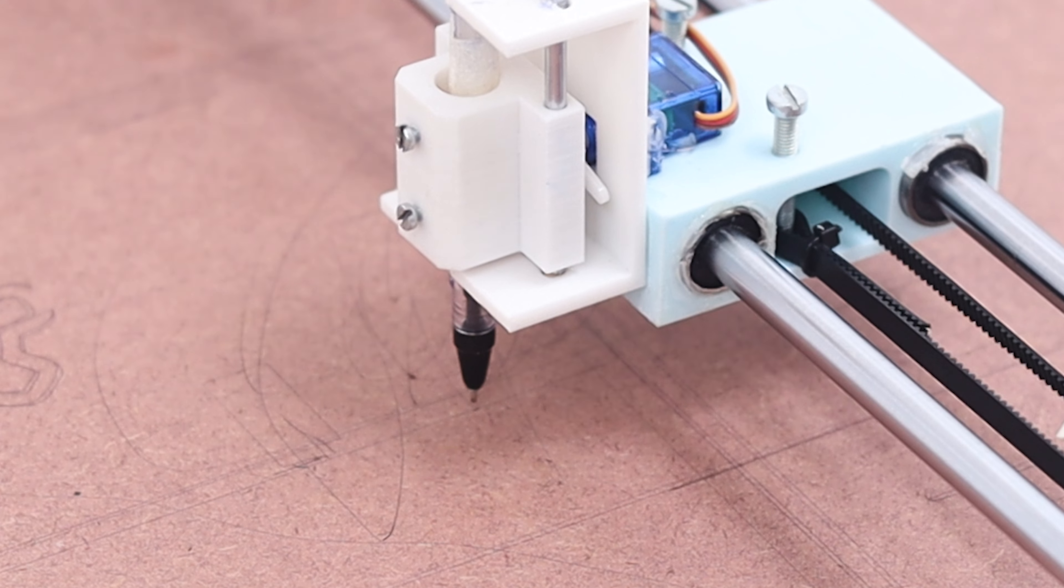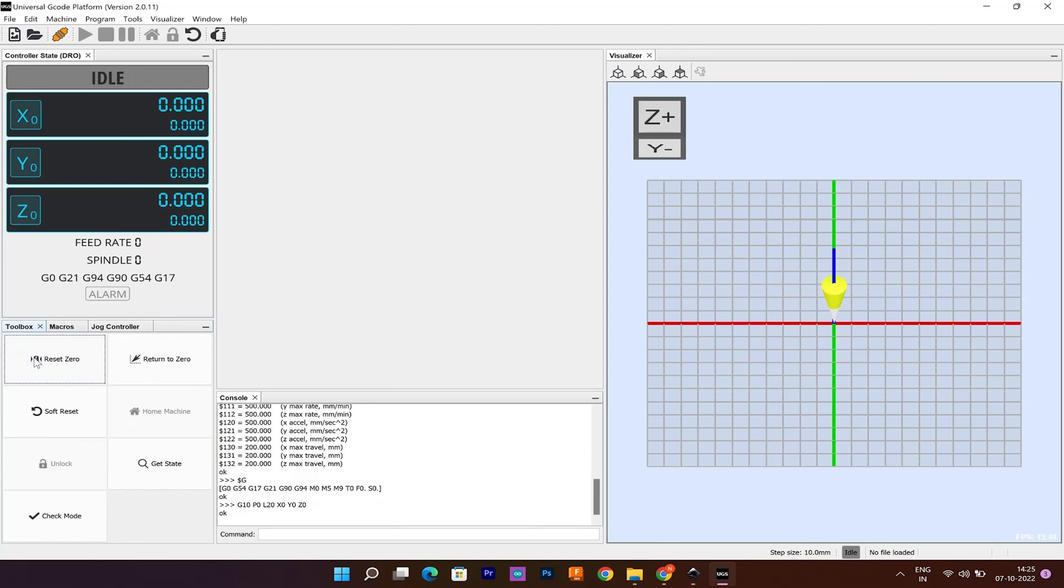Before proceeding, please check your pen up and down commands are working properly. Finally, open up the G-code in the UGS and press the play button.